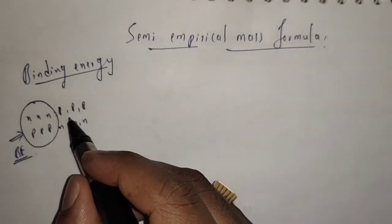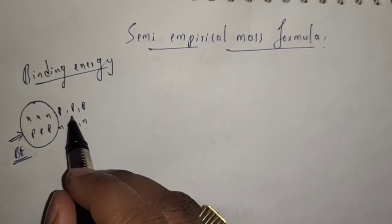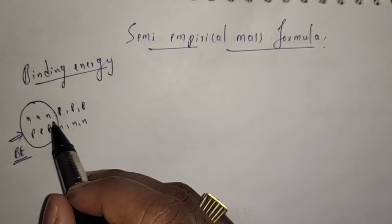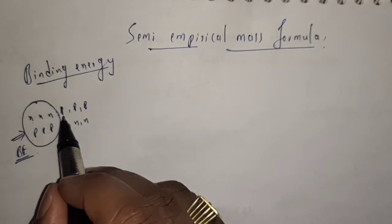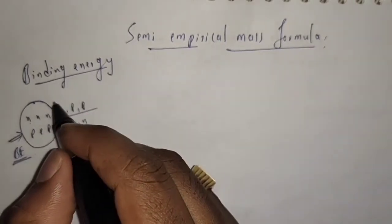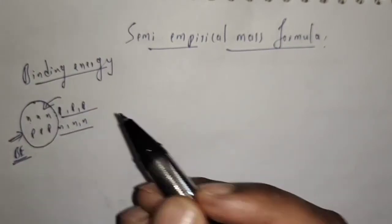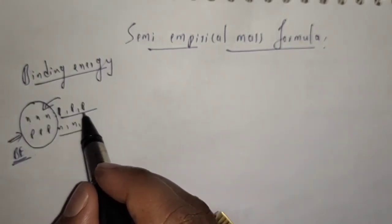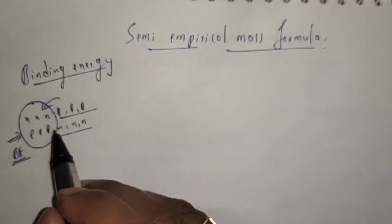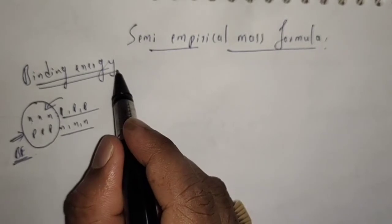In other words, we can define binding energy as the energy that would be liberated by combining individual protons and neutrons into a single nucleus. That is, to form a single nucleus from constituent particles, some amount of energy is required. We call this energy binding energy.